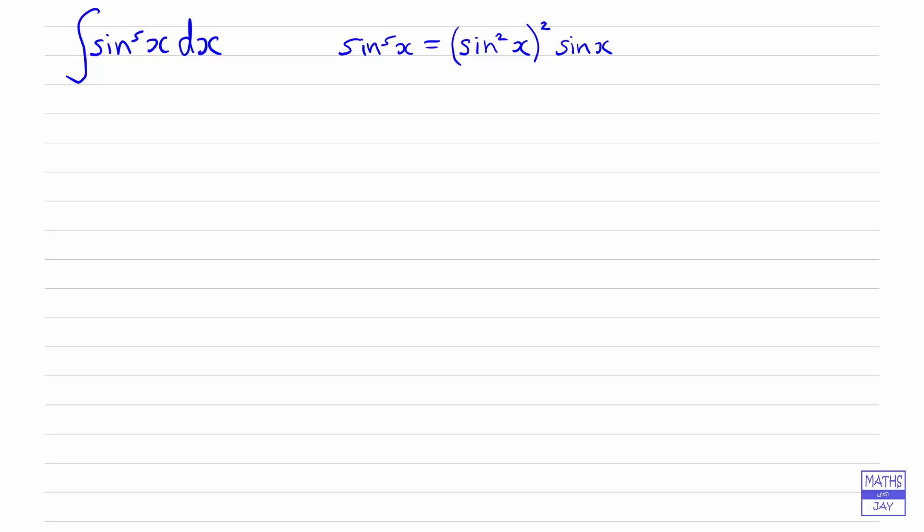So I've rewritten sine to the power of 5x as sine squared x squared times sine x. And the reason that we've done that is because we can replace sine squared x in terms of cos squared x. And then you'll see that we can easily make a u substitution.